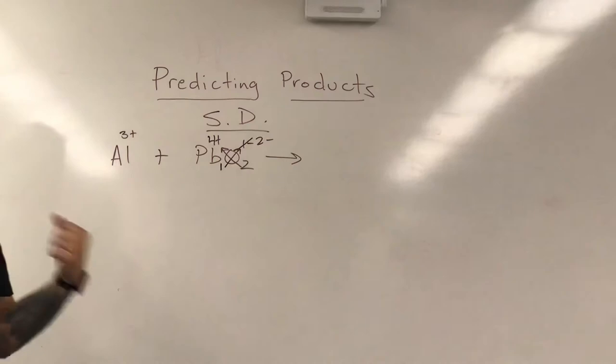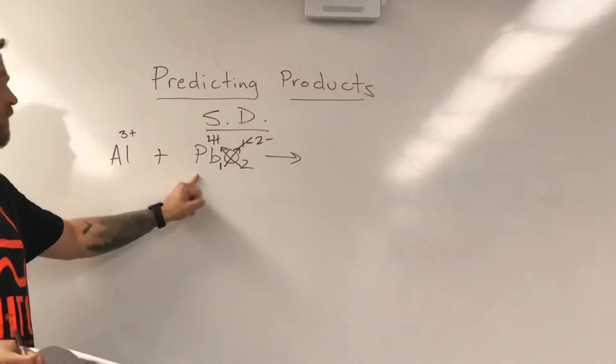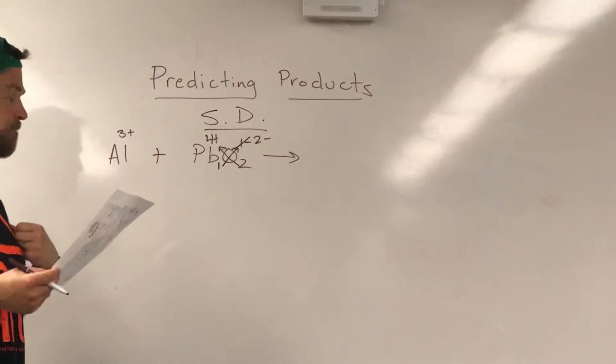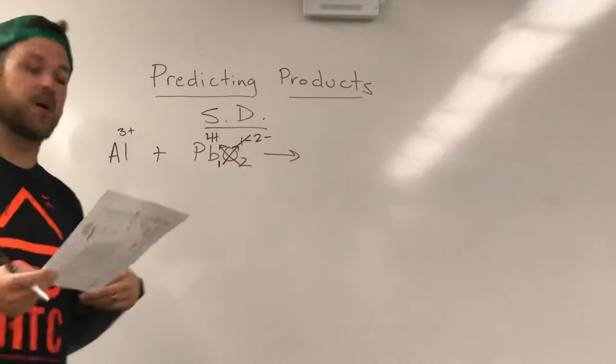This is the part where we need to get out our activity series and look and see where do these two metals exist. Is aluminum stronger than lead and can it boot it out of being paired to O? So if we look at our activity series, we'll find aluminum is about a third of the way down. Lead, on the other hand, is about two-thirds of the way down, closer to the bottom below the word 'decreasing activity.'